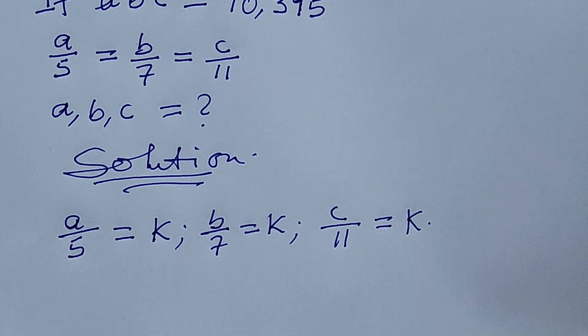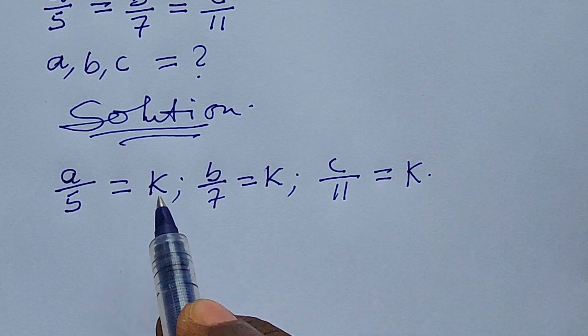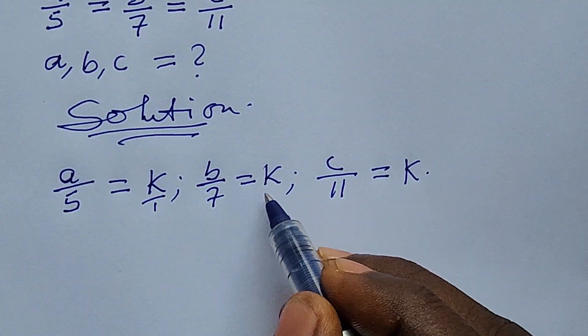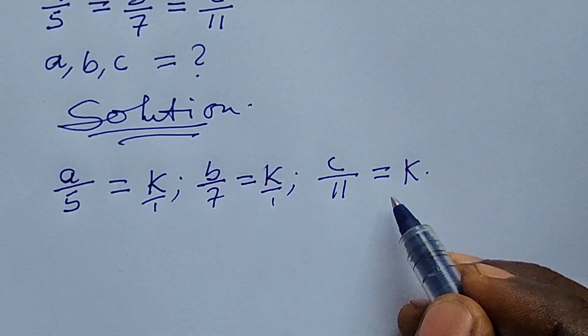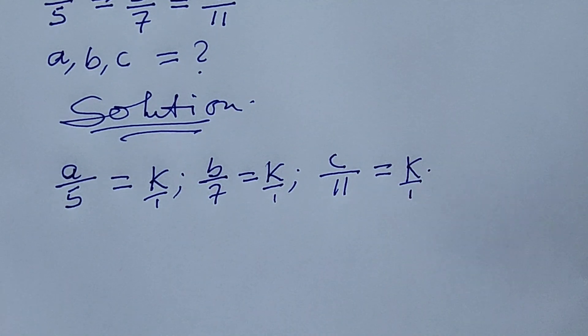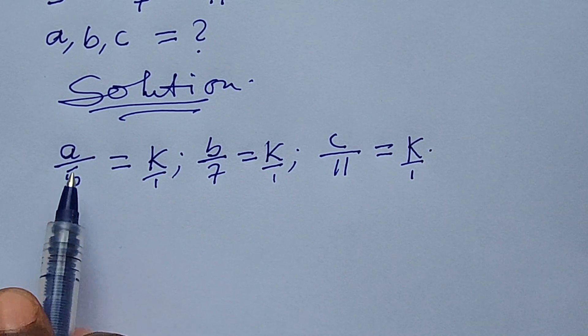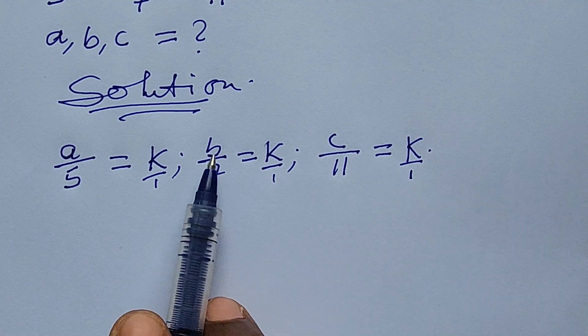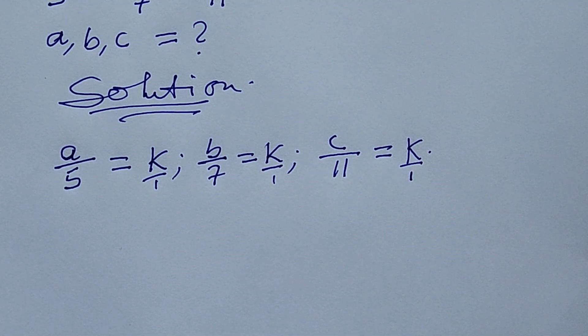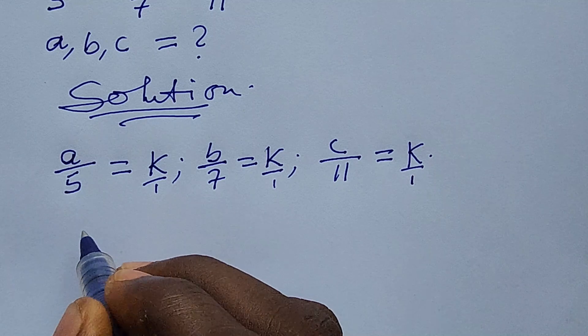So if we have this, then this is all over 1, invisible 1. This is also all over invisible 1. So we can make a the subject of the formula here, make b the subject of the formula, and make c the subject of the formula. So let's go ahead and do that.